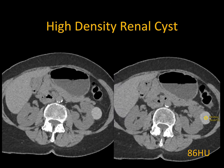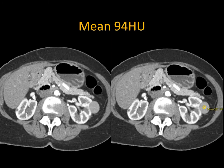When you see a lesion like this in the ER — an incidental lesion, well-defined, high density, 86 Hounsfield units — you don't need to think very much. That's a high-density renal cyst. This also shows the importance of non-contrast scans.